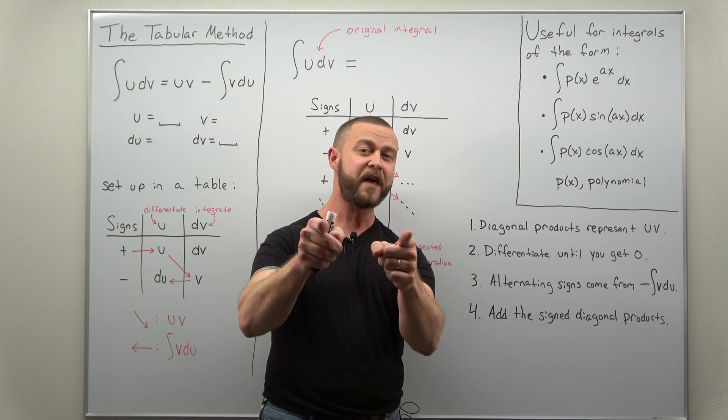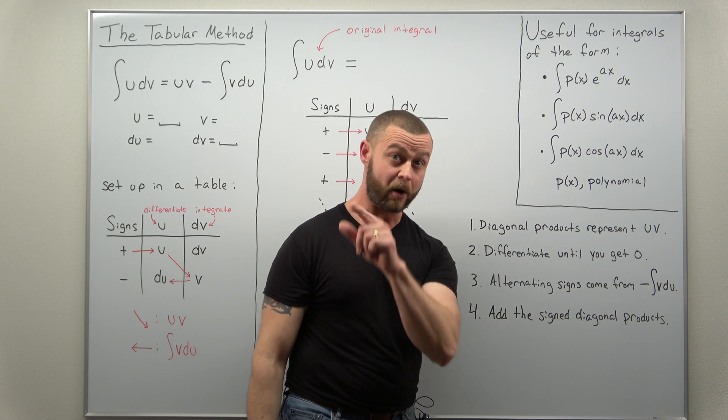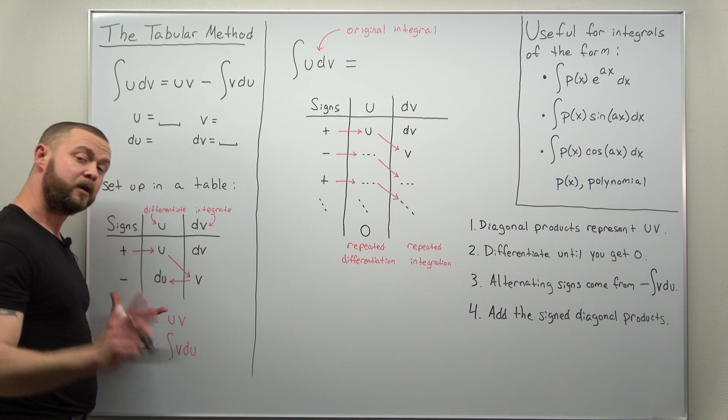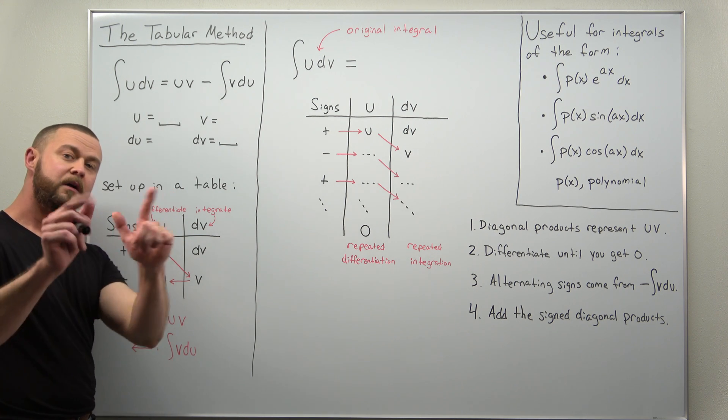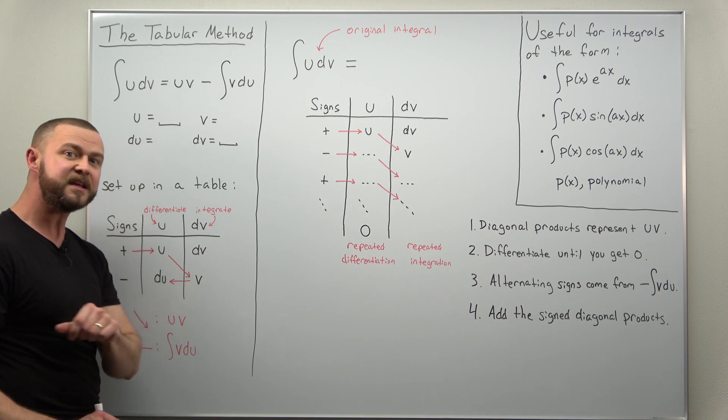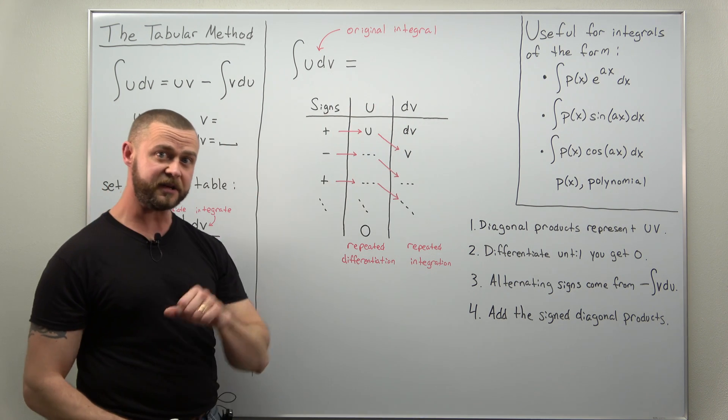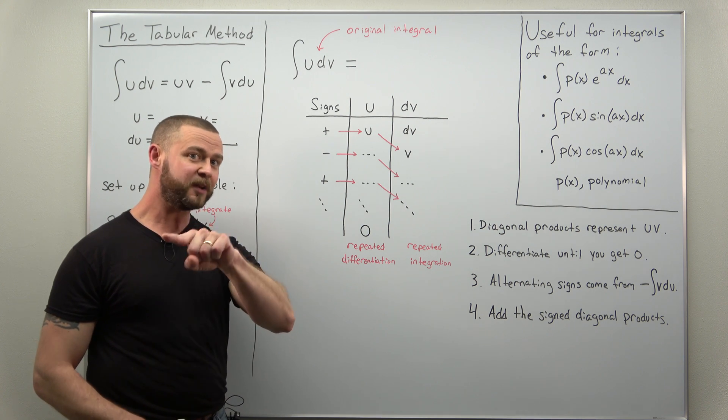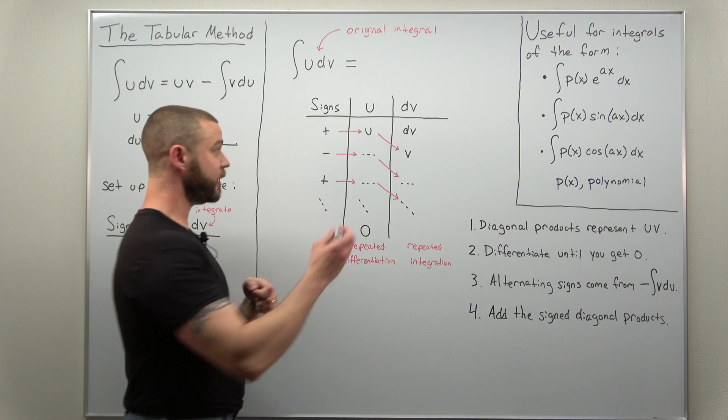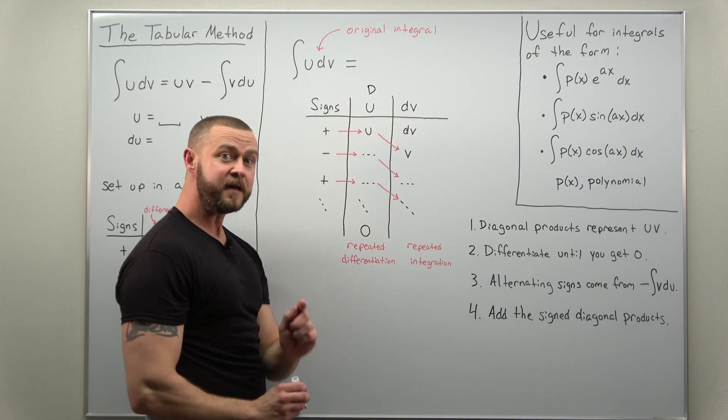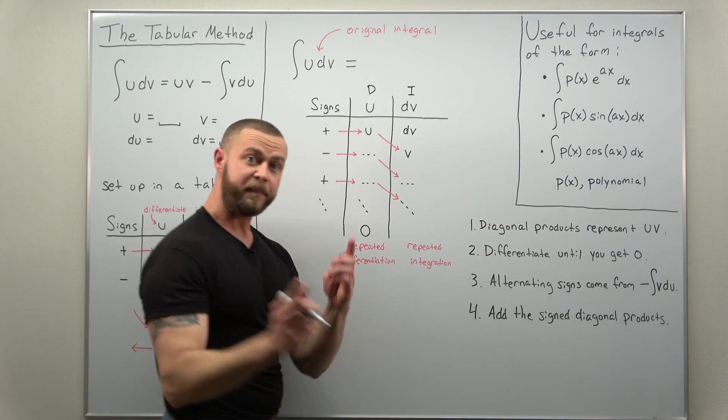Taking our work from the basic integration by parts formula and rearranging it in a table, the tabular method just speeds this up. We make all of our usual choices for u and dv. Why this is called in some places the DI method is with u you differentiate and dv you integrate.